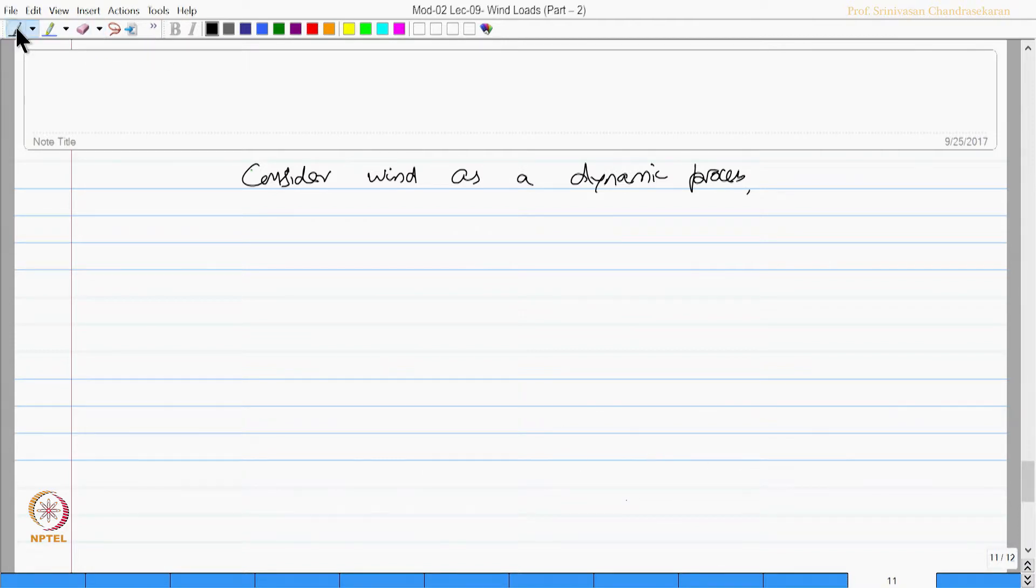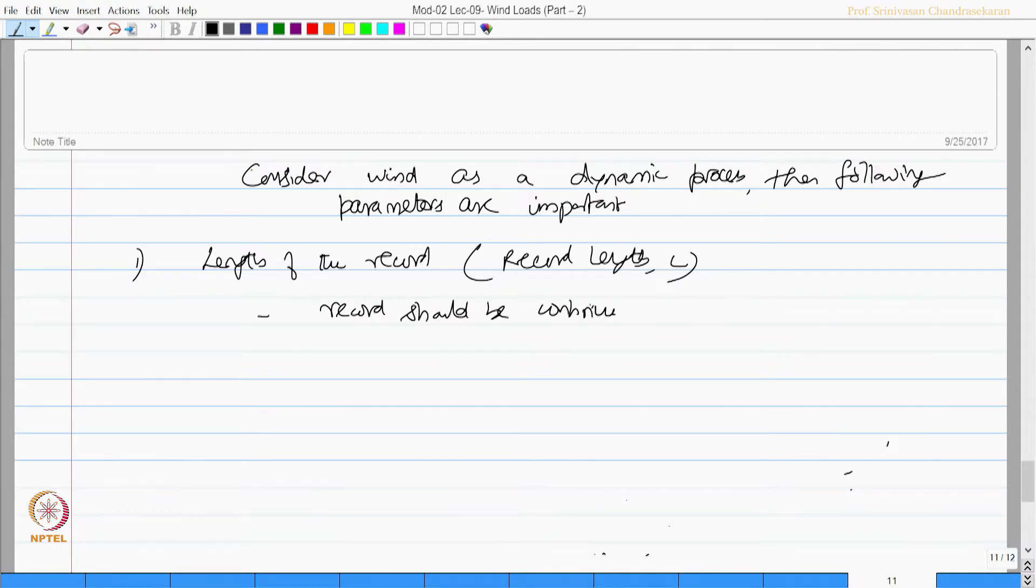Then, following parameters are important. One: length of the record, we can also call this as record length. The record should be continuous, there is one option. You can also make intermittent and record, but sufficiently for long time.